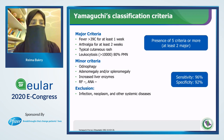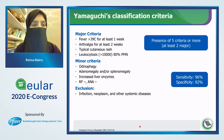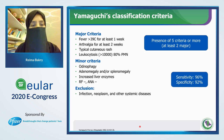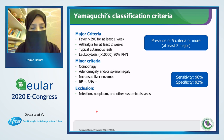We have the old Yamaguchi classification criteria, which has a sensitivity of 96% and specificity of 92%, and it requires the presence of five criteria or more. The major criteria include fever lasting one week, arthralgia for at least two weeks, typical cutaneous rash, and leukocytosis more than 10,000 predominantly neutrophils. Minor criteria include lymphadenopathy and/or splenomegaly, increased liver enzymes with negative ANF and rheumatoid factor. We should exclude infections, neoplasm, and other systemic diseases.